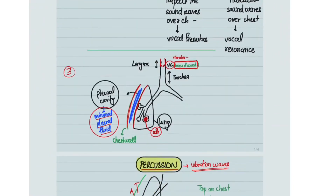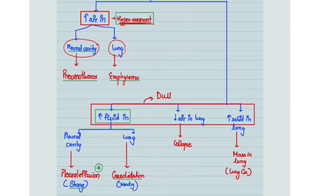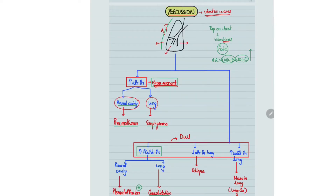Now we will talk about chest percussion. When we tap on the patient's chest, vibration waves are produced and we listen for the note. Since vibration waves travel better in air than liquid or solid, whenever there is increased air — either within the lung or within the pleural cavity — there will be a hyper resonant note. Whenever there is increased fluid in the pleural cavity, increased fluid within the lung, decreased air in the lung, or increased solid within the lung, in all these cases vibration waves travel less.